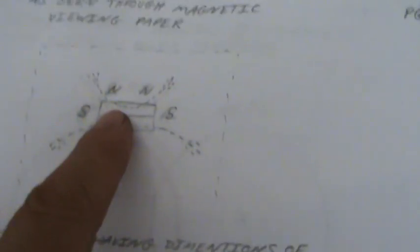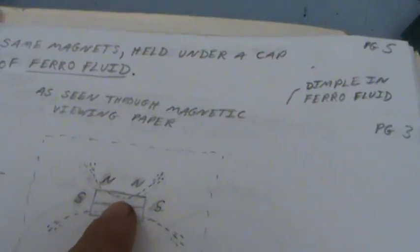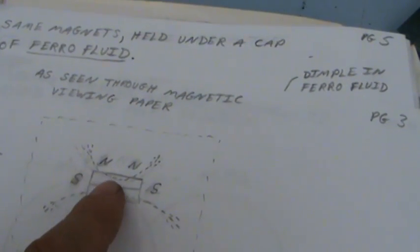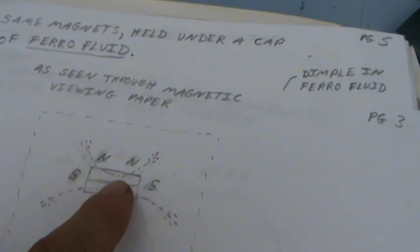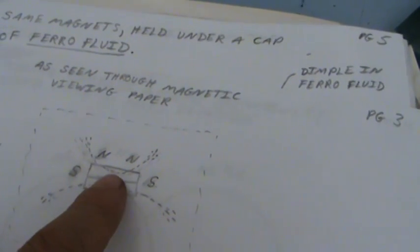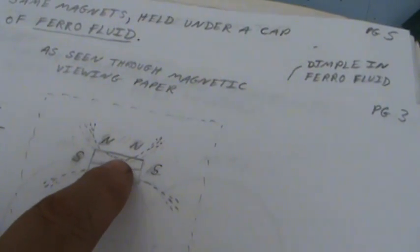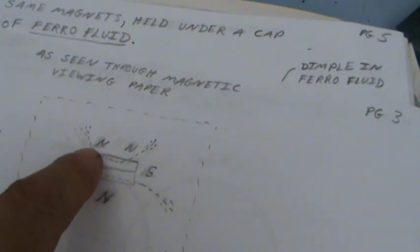Again, I was saying about... Remember, this is as viewed through magnetic viewing paper, which is showing the divisions of north and south. Now, you can see this field just goes way up in the air and just dips down slightly into the magnet here.